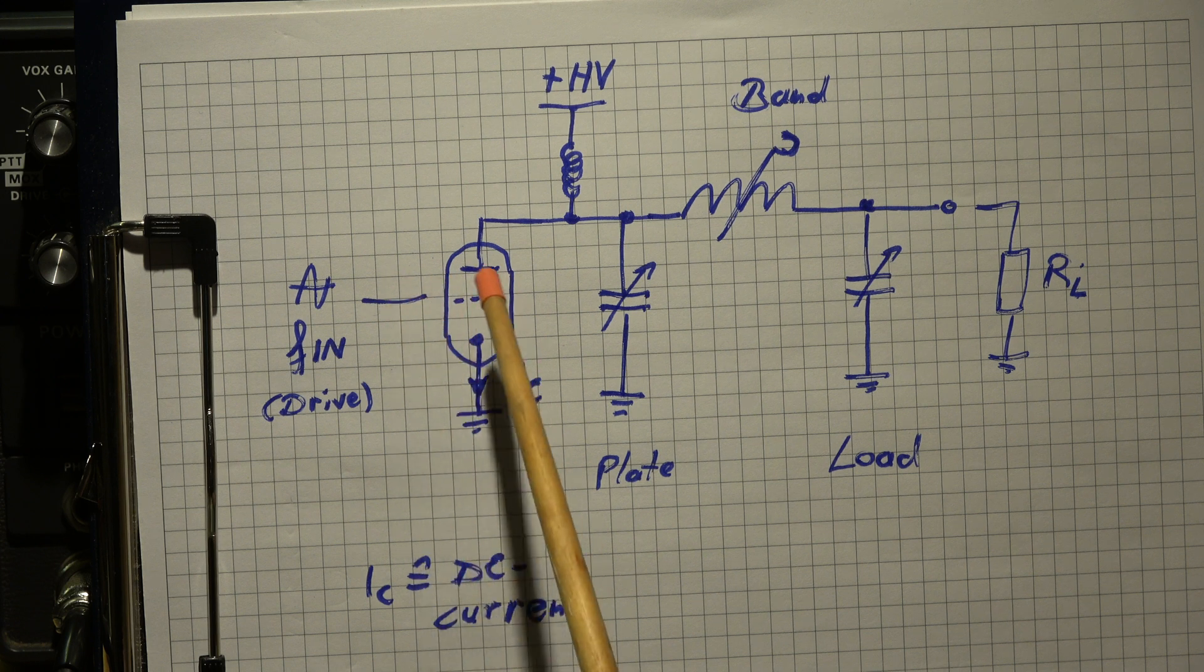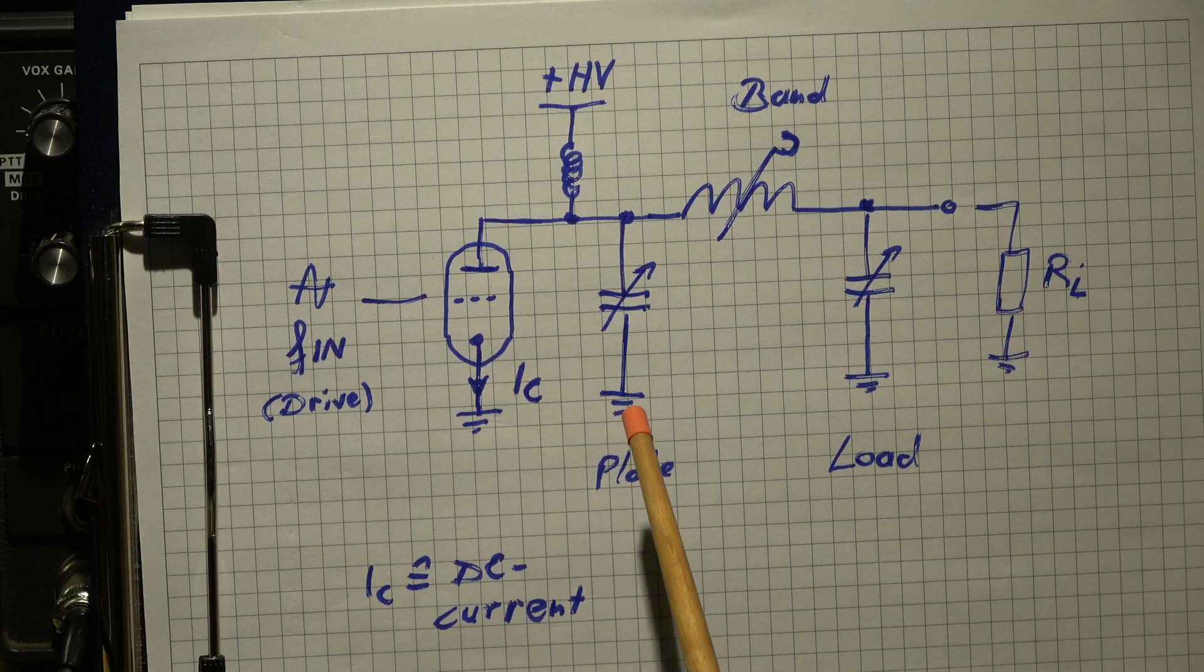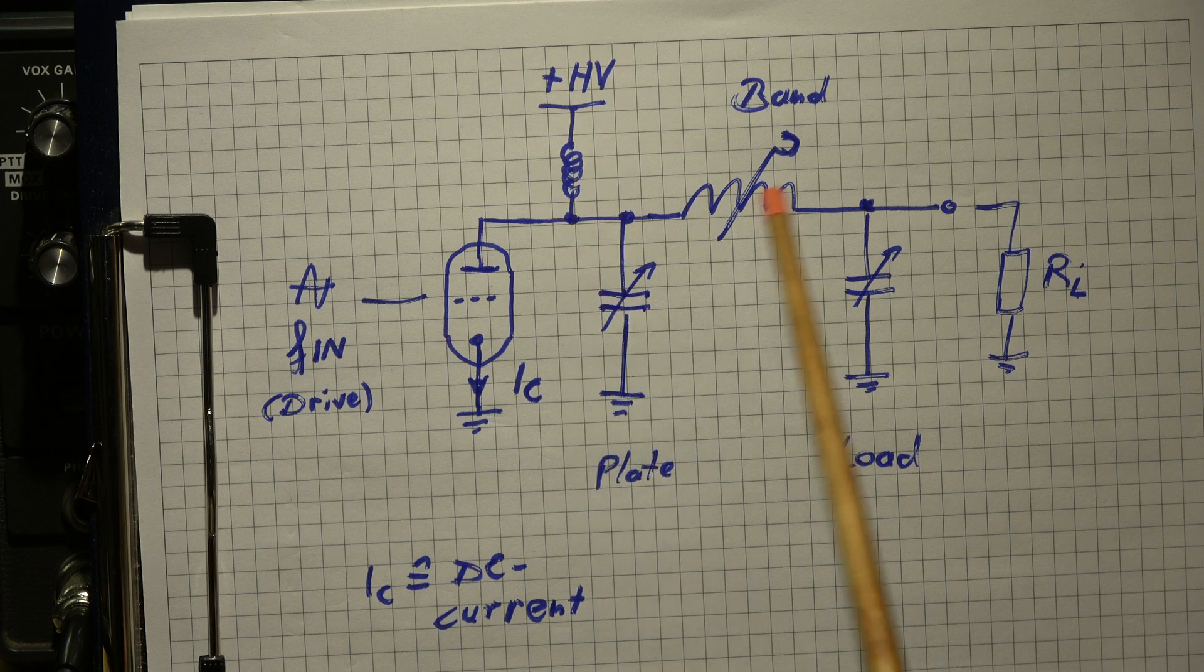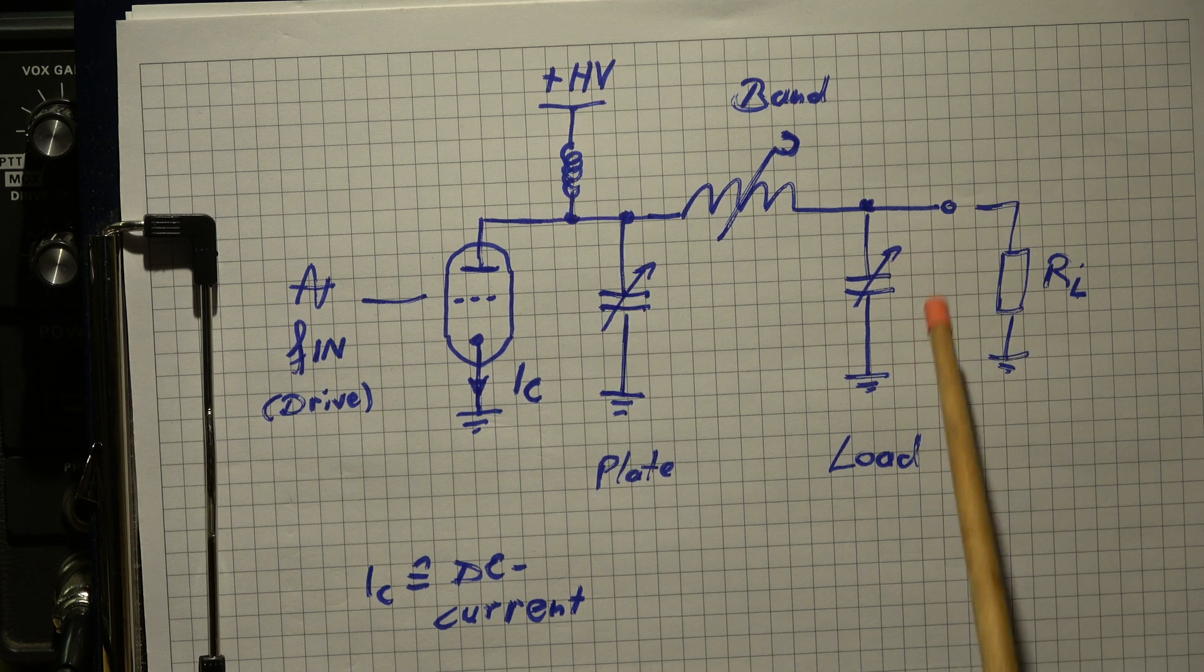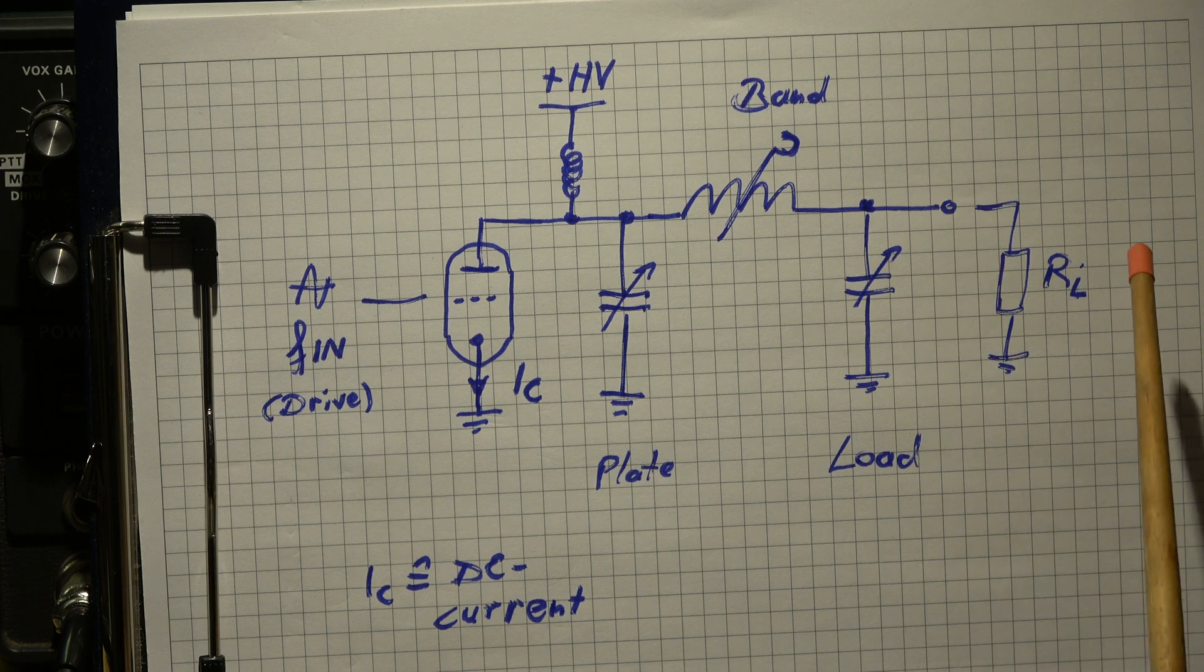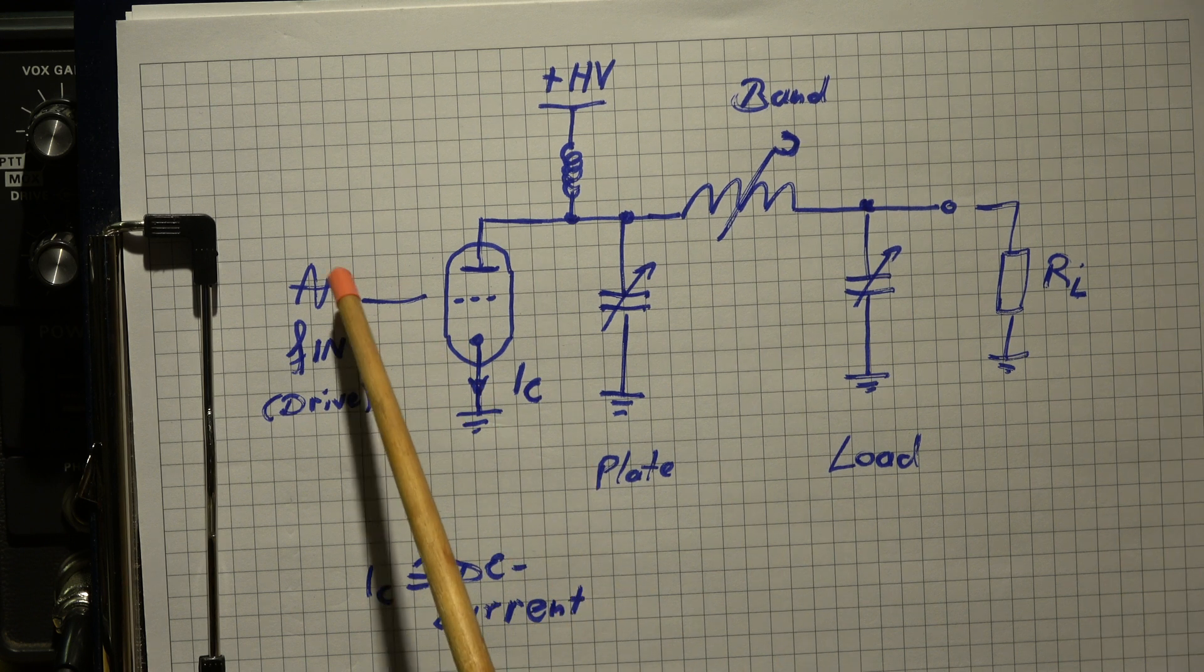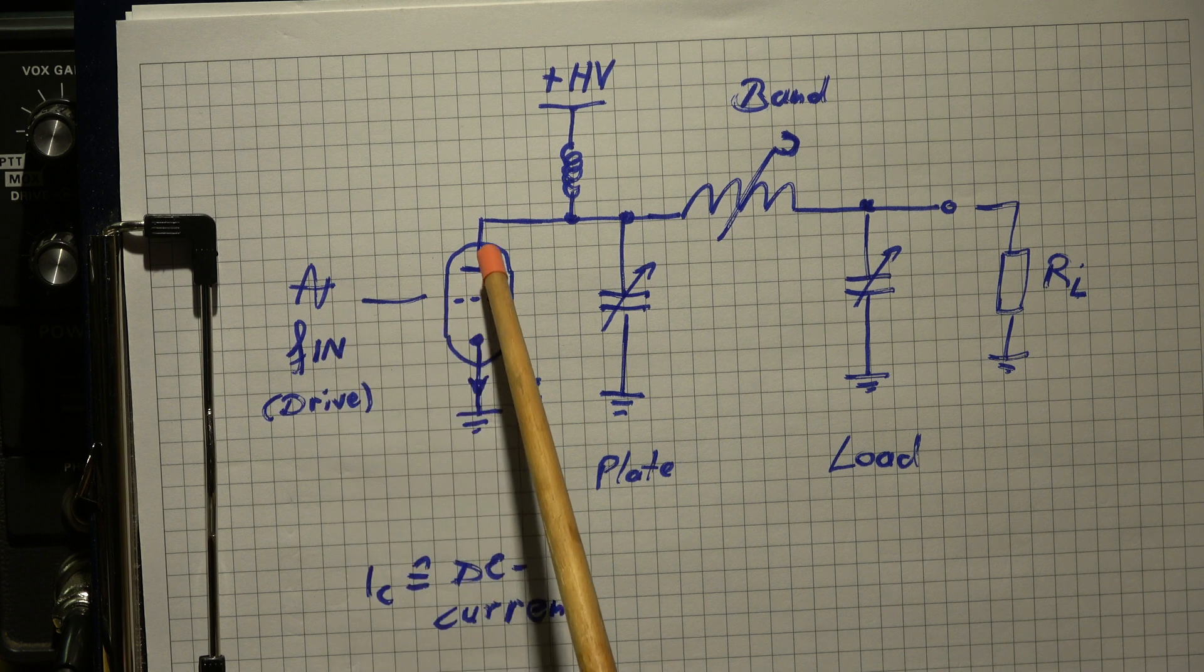I have only the control grid, not the screen grid, not the cathode resistor. There's also a coupling capacitor to prevent the high voltage to be fed to the output. Here we have a choke to ground so the antenna connection is grounded for DC and other things. We have here the control grid drive input frequency.